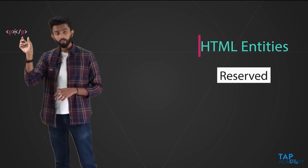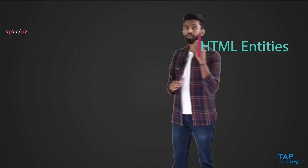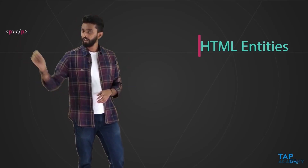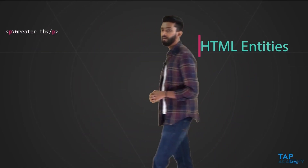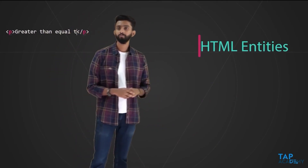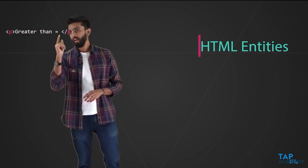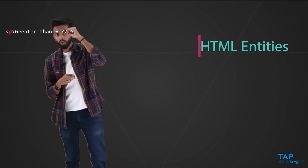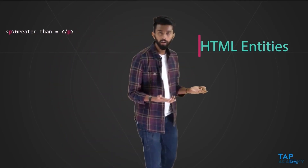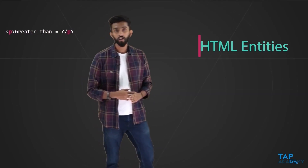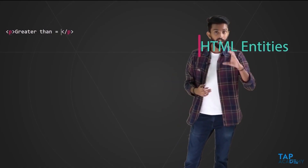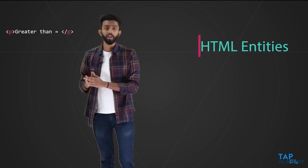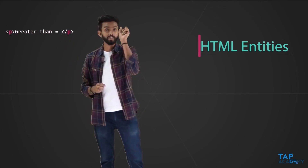The less-than and greater-than symbols are reserved in HTML — they denote tags. But what if inside the `p` tag I want to display the greater-than symbol as part of text, like 'equal to >'? The browser might get confused: does this symbol mean a tag is opening, or has someone forgotten to close a tag? That confusion is exactly the use case for HTML entities.